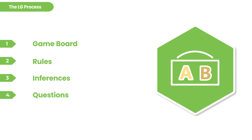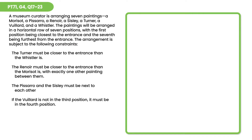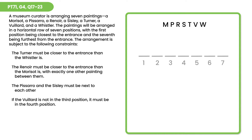So let's practice this starting with step one — let's come up with a game board for the following game. We're told that we have seven paintings, and the paintings will be arranged in a horizontal row of seven positions with the first position being closest to the entrance and the seventh position being furthest from the entrance. This is an ordering game where we're putting the paintings in order from closest to furthest, one through seven. Our game board is going to be a straightforward number line.